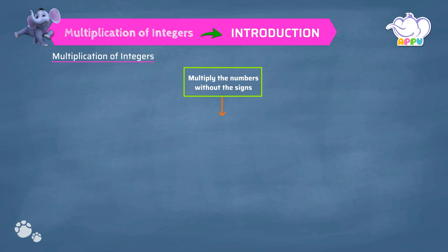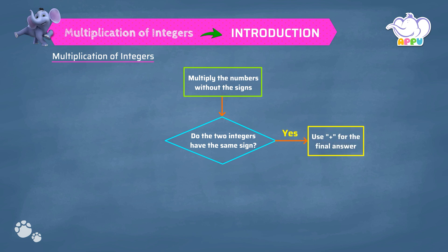Step 2: Do the two integers have the same sign? If the integers have the same sign, then use plus for the final answer. If the integers have different signs, then use minus for the final answer.